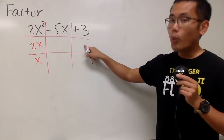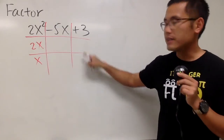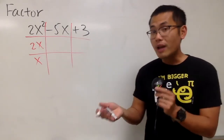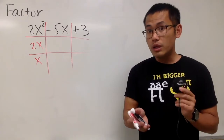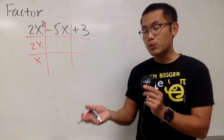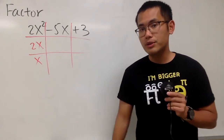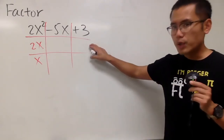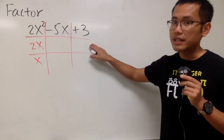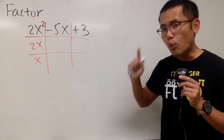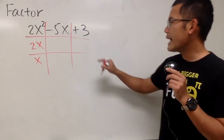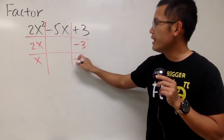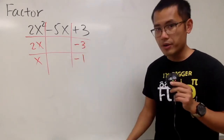Now let's move here. What times what will give us positive 3? We can have negative 1 times negative 3, or positive 1 times positive 3. The correct combination we're going to use is negative 1 and negative 3 — we'll put negative 3 here and negative 1 right here.